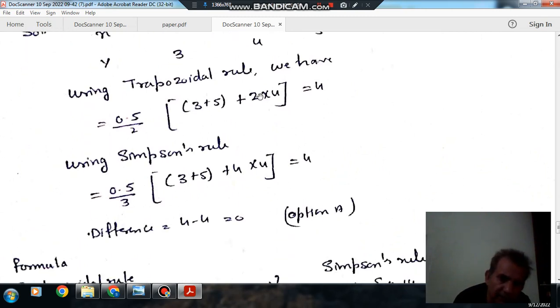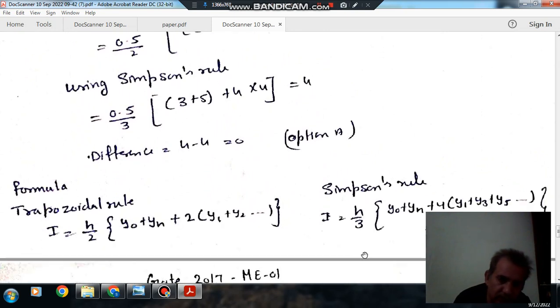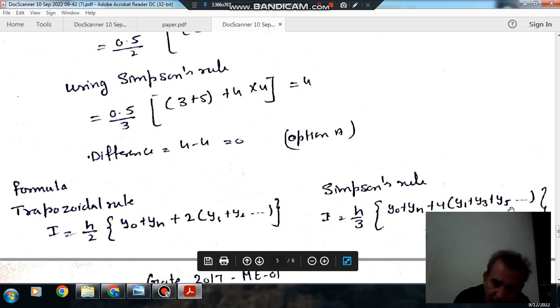Now using Simpson's rule, the formula is h/3 times [y₀ + yₙ + 4(y₁ + y₃ + y₅ + y₇...) + 2(y₂ + y₄...)].